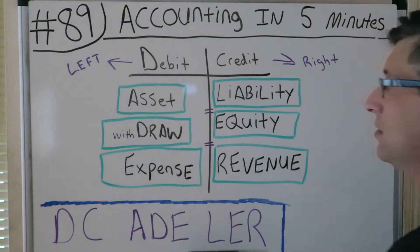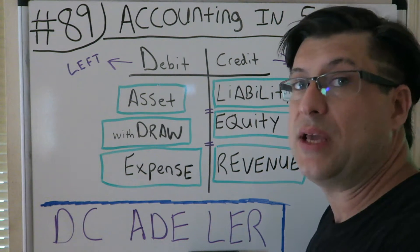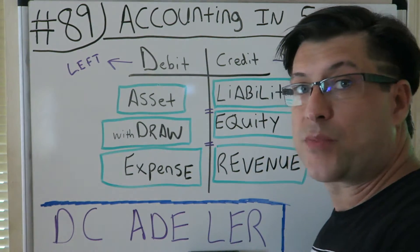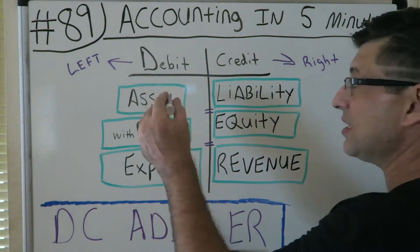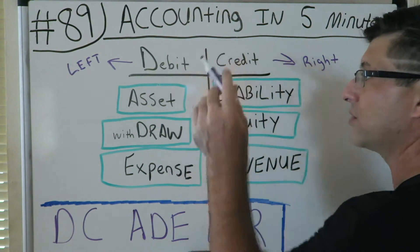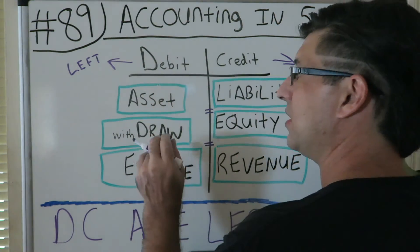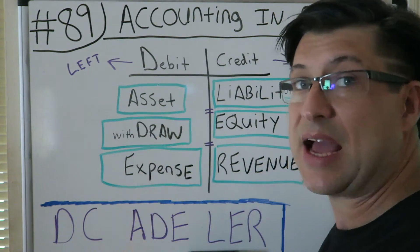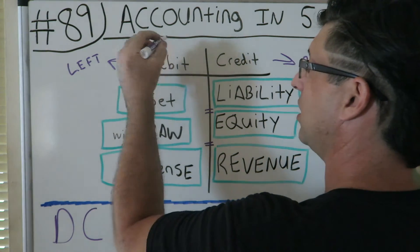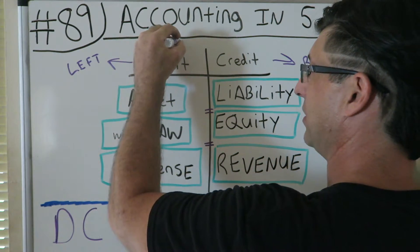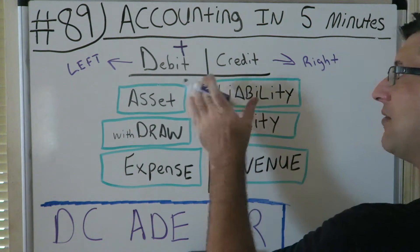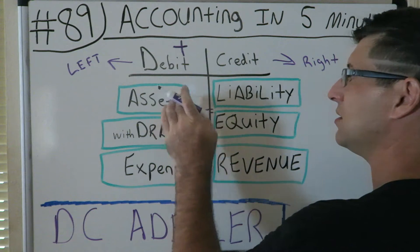A certain transaction can be an asset and a debit, but an asset can also be a credit. So basically an asset can be either a debit or a credit. If you have an asset like cash and it is going up or increasing, it would be a debit. If it was decreasing, it would be a credit.